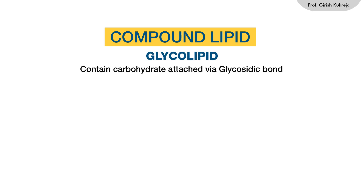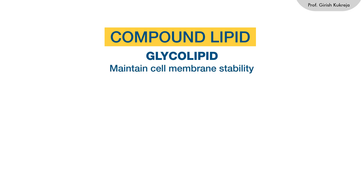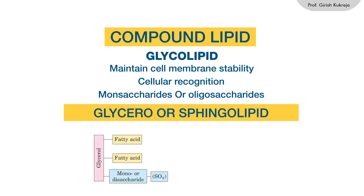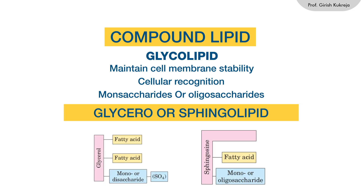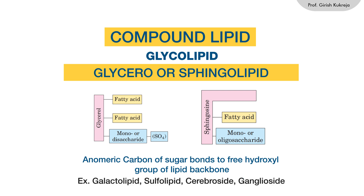Glycolipids are lipids that contain carbohydrate attached by a glycosidic bond. They maintain cell membrane stability and are involved in cellular recognition. They may contain monosaccharides or oligosaccharides bound to the lipid, and may be glycero- or sphingolipids depending on the backbone. The anomeric carbon of the sugar binds to the free hydroxyl group of the lipid backbone. Examples include galactolipid, sulfolipid, cerebroside, and gangliosides.